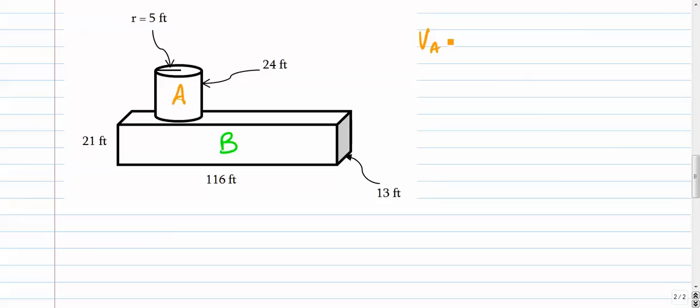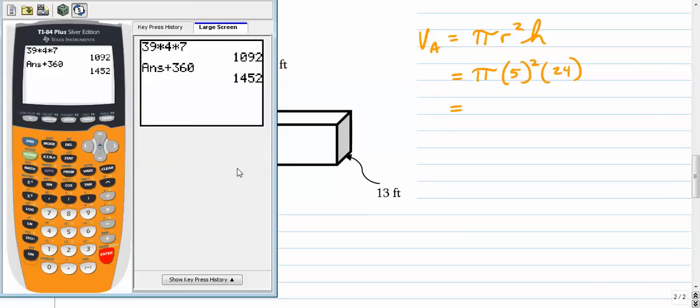Volume of figure A is pi r squared h. That's a cylinder volume. The radius is 5, the height is 24. And all you want to do is just multiply that out. 25 times pi times 24, and you get 1884.955.